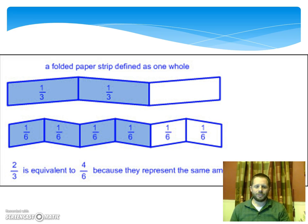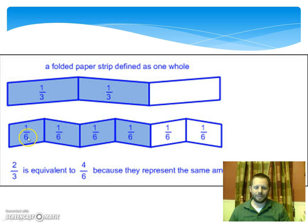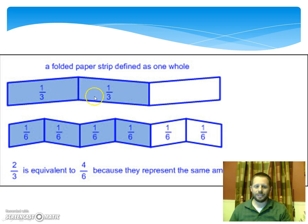Let's change up our fraction a little bit. For this one we have one-third. The entire strip from beginning to end represents our whole — this is just a piece of paper that I folded into three equal-sized pieces. So each piece of the paper from fold to fold represents one-third of the entire strip, because it takes three of these pieces to make the whole. Now if I took that same piece of paper and folded it in half one more time, it would create six equal-sized pieces between the folds, so now each piece is equivalent to one-sixth. If I shade in the first two pieces of my one-third strip, I've shaded in two-thirds.